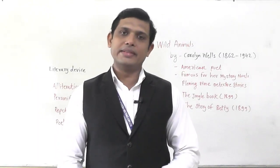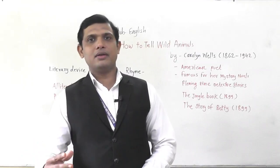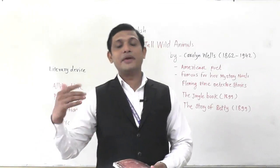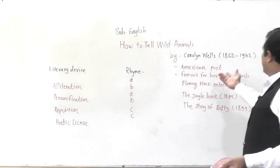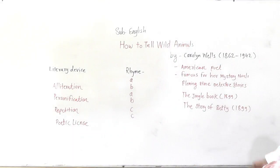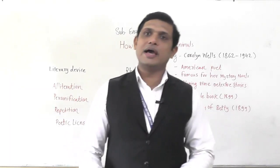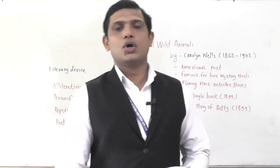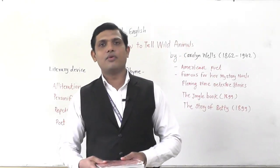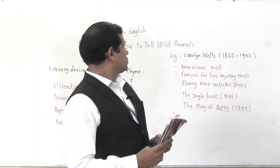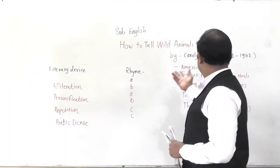In this poem today we are going to learn one poem where the poetess wanted to explain the features of wild animals. The name of the poet is Caroline Wells who has written the poem 'How to Tell Wild Animals.' In this poem she has told the different features of wild animals.